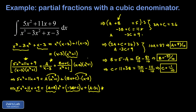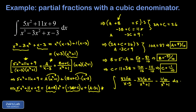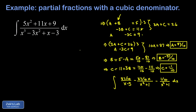With A, B, and C found, we rewrite the integrand as simpler pieces. The integral splits into: A over (x minus 3), plus Bx over (x squared plus 1), plus C over (x squared plus 1). For the first piece, pulling out 87 tenths, the integral of 1 over (x minus 3) is the natural log of the absolute value of (x minus 3).